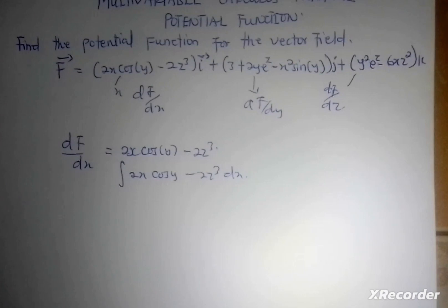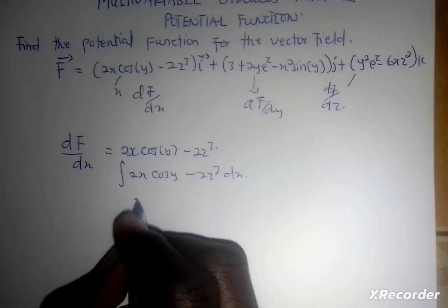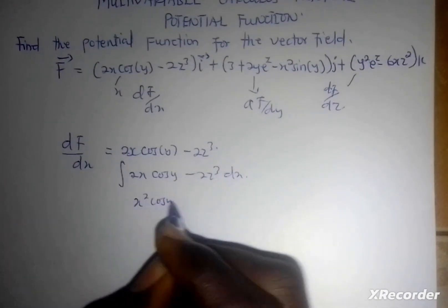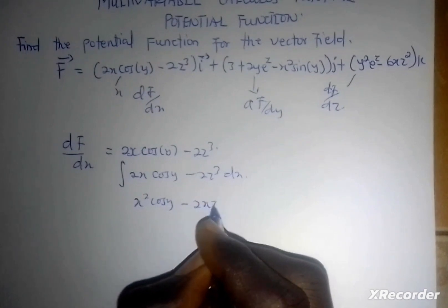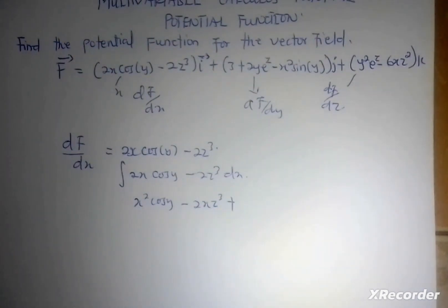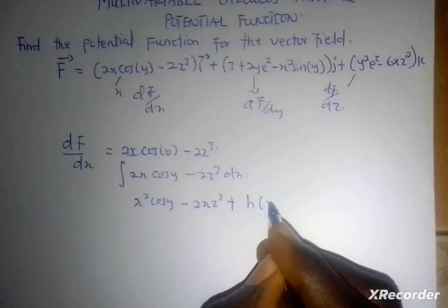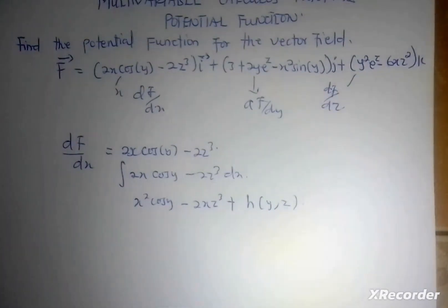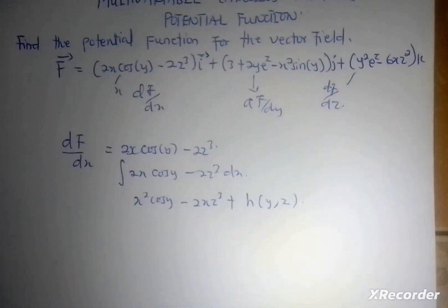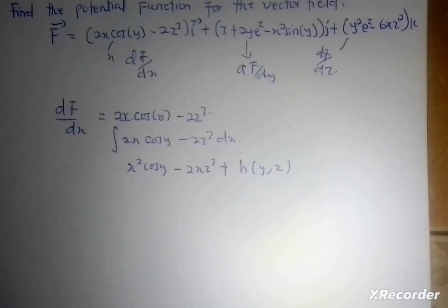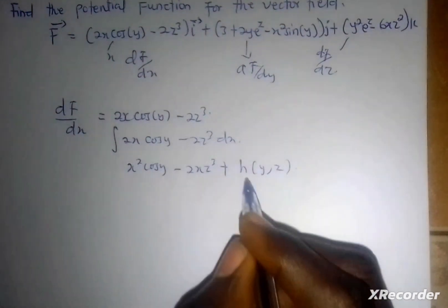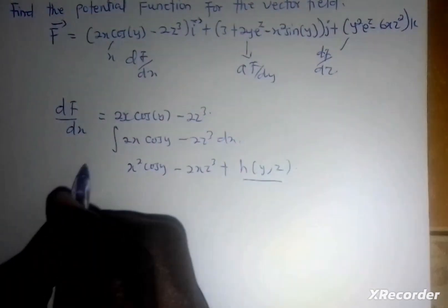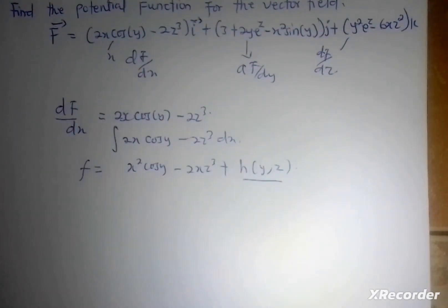Integrating this, I'm going to get x squared cos(y) minus 2xz cubed. But my constant of integration now becomes a function of two variables — that is, h(y, z). Once I have this, the next thing I'm going to do is find h(y, z) to complete my potential function.